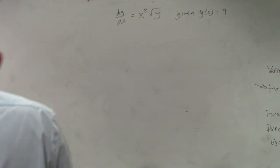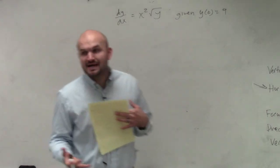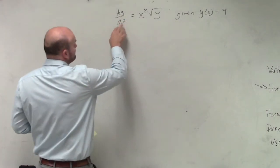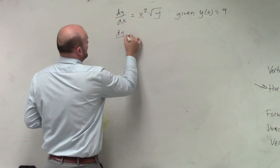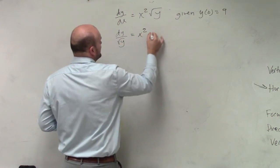So the first thing I'm going to want to do, guys, is I'm going to go ahead and get my, as I mentioned, I'm going to get my y's all on one side and my x's all on the other side. So I'll basically multiply by dx on both sides and divide by dy on both sides. So therefore, I have dy over the square root of y equals x squared dx.